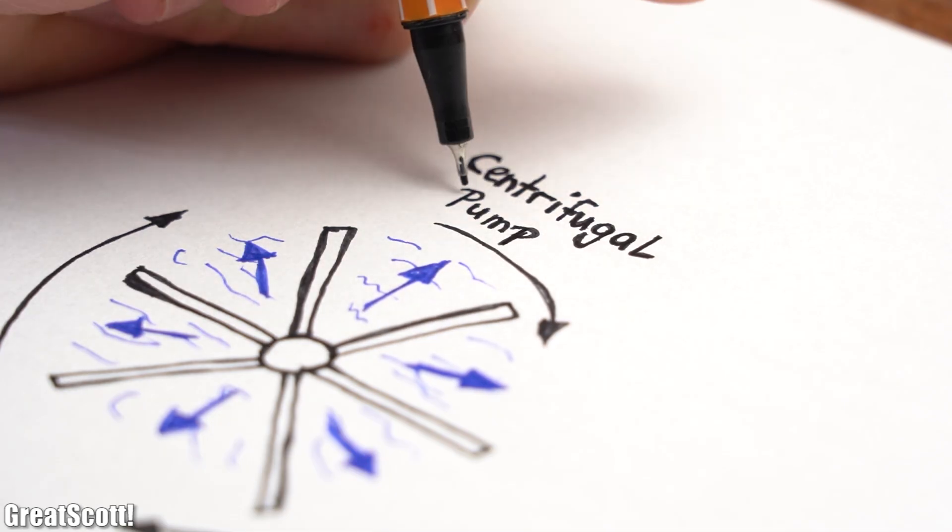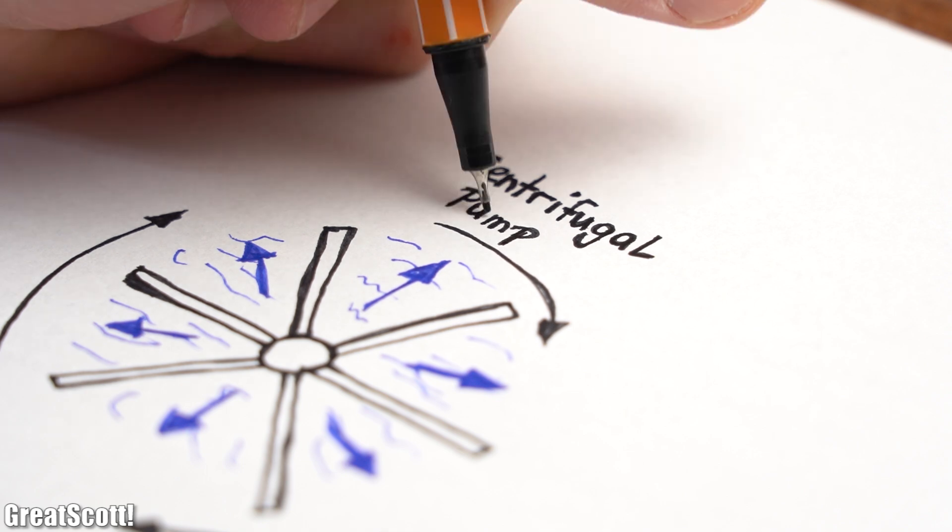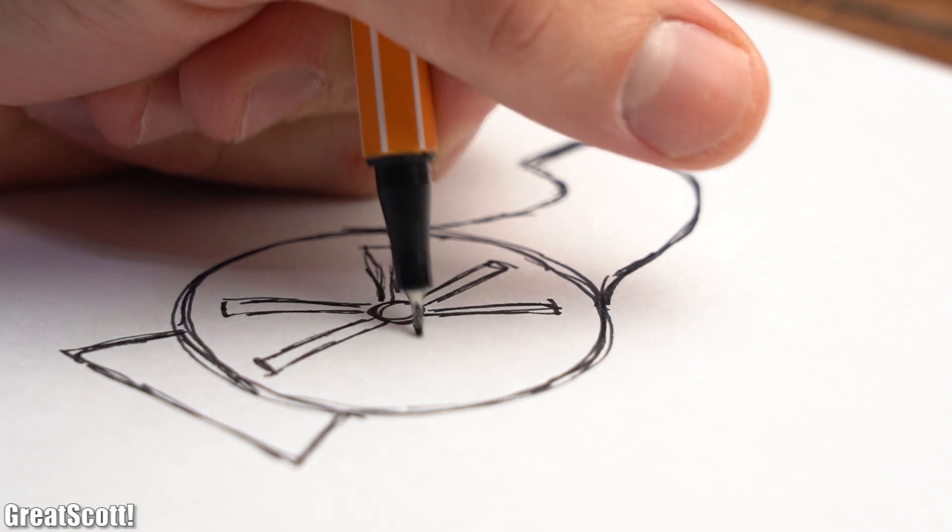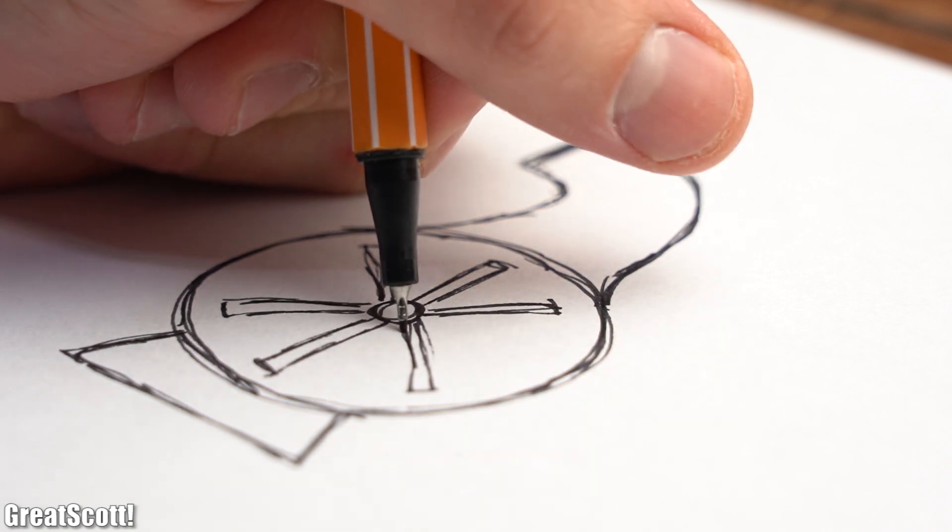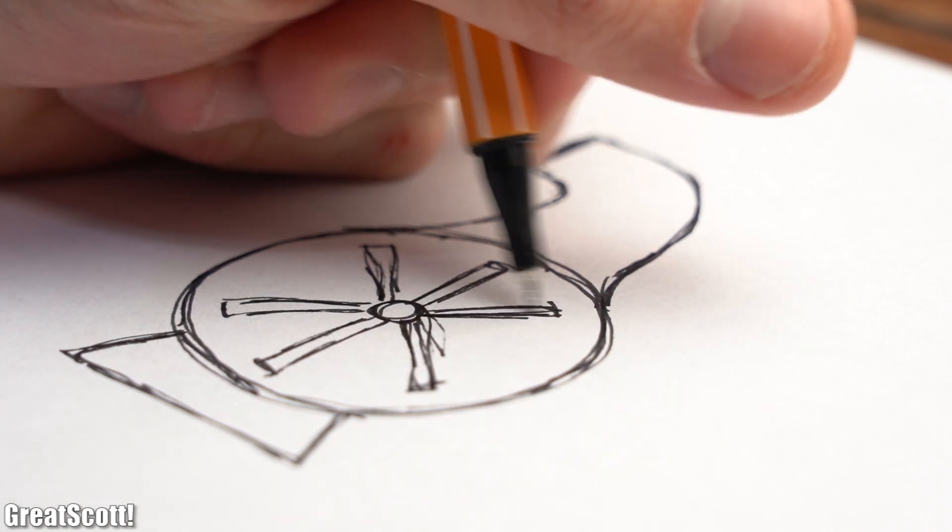Because of this functional principle, this kind of pump is known as a centrifugal pump. And theoretically we should be able to 3D print the mechanical parts for it.